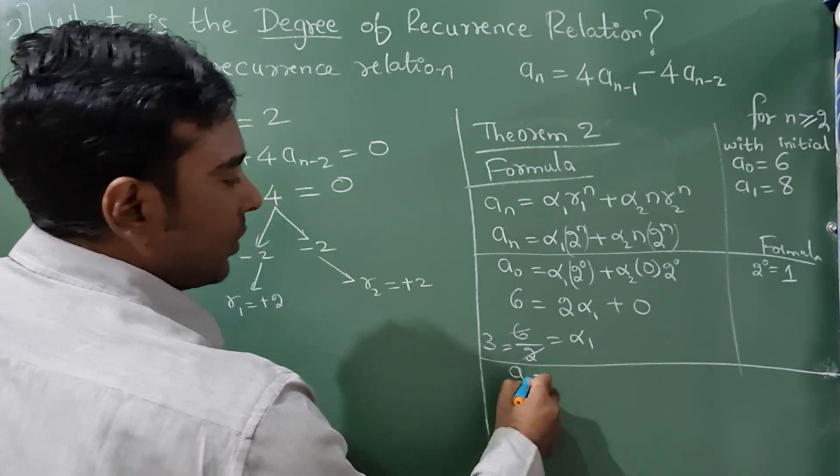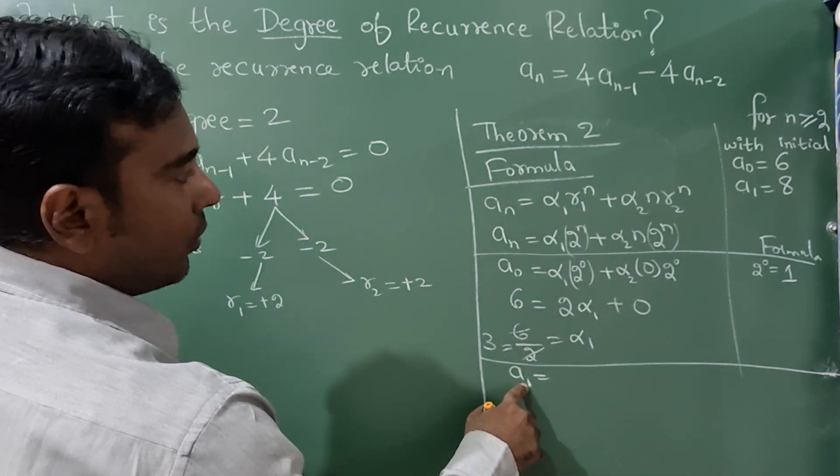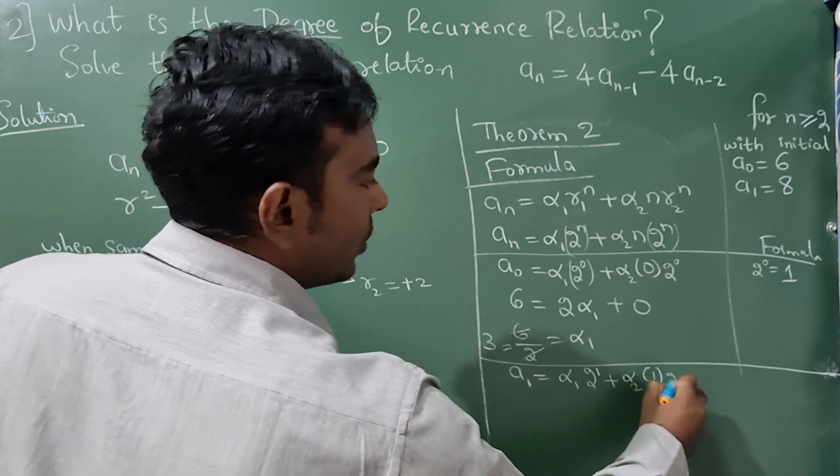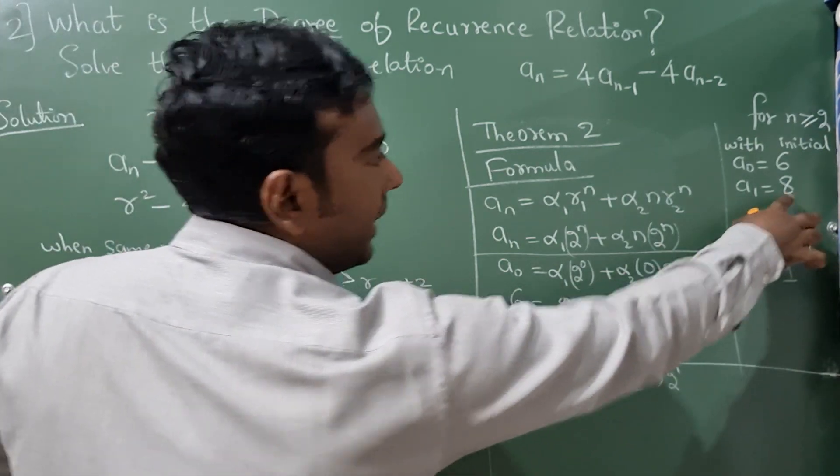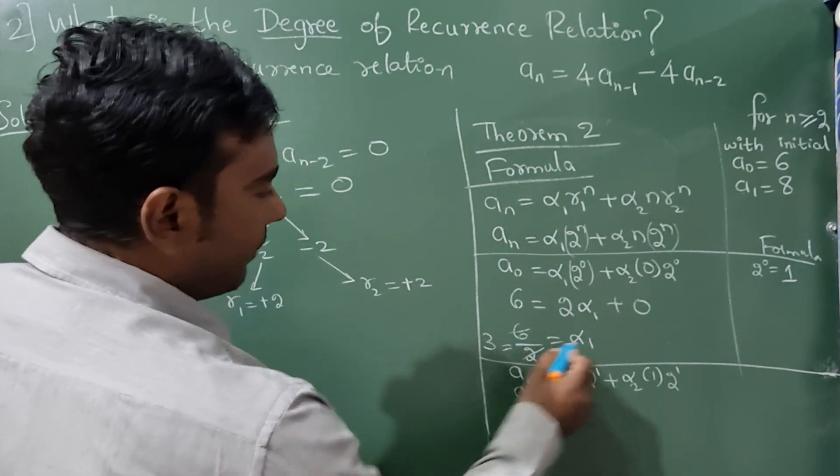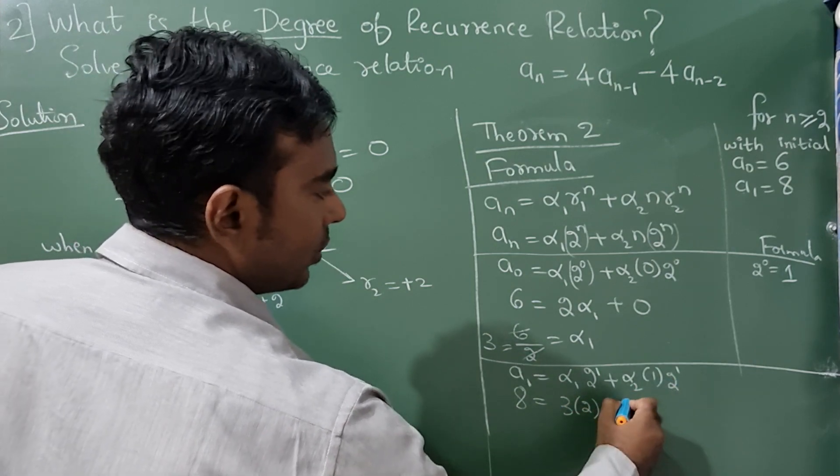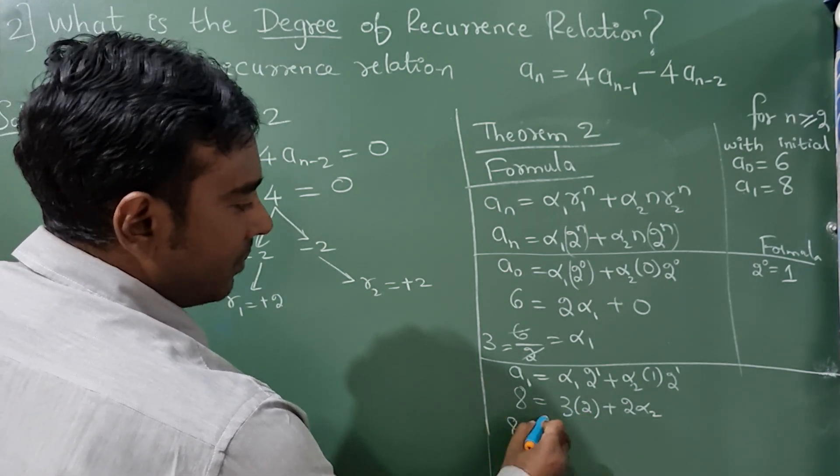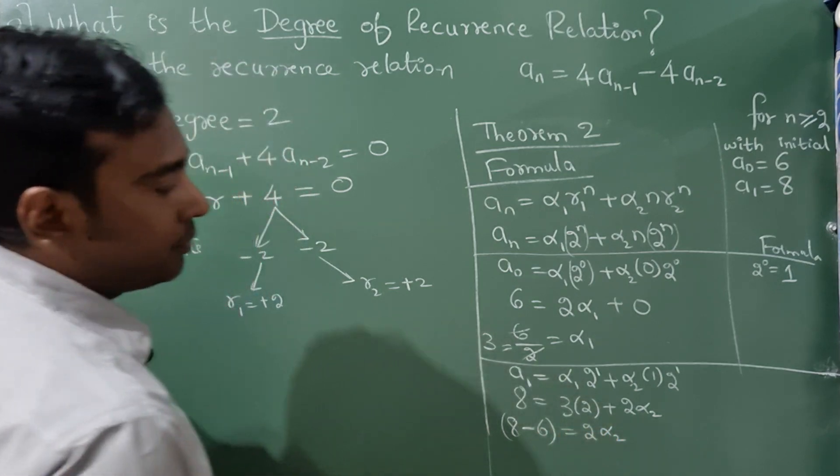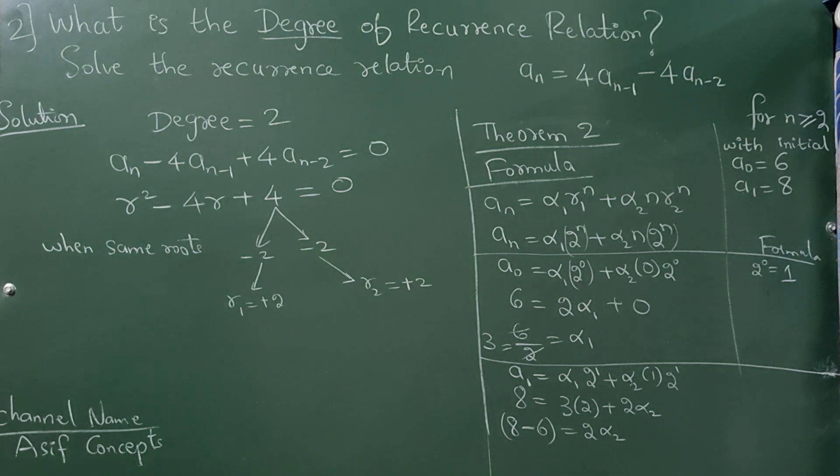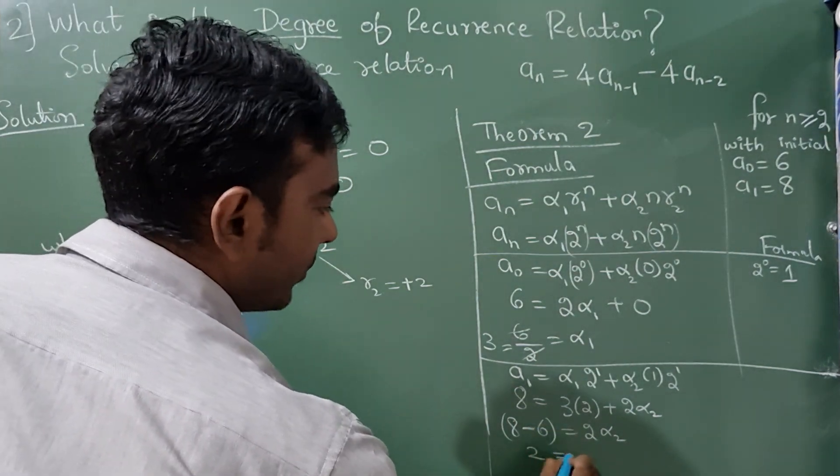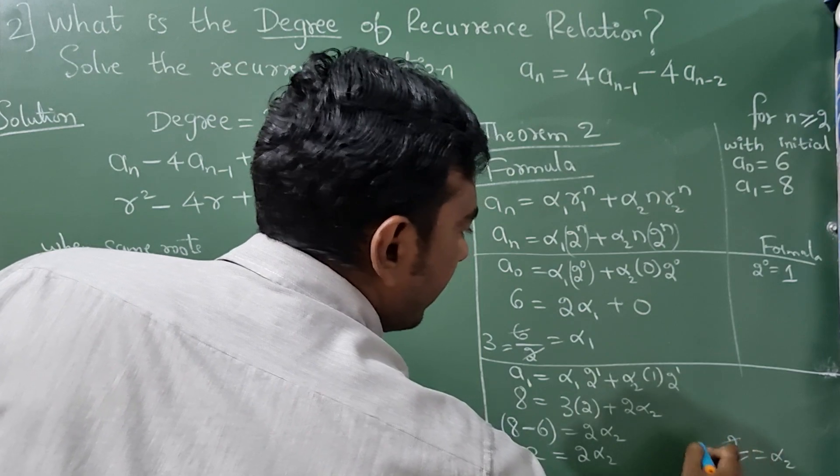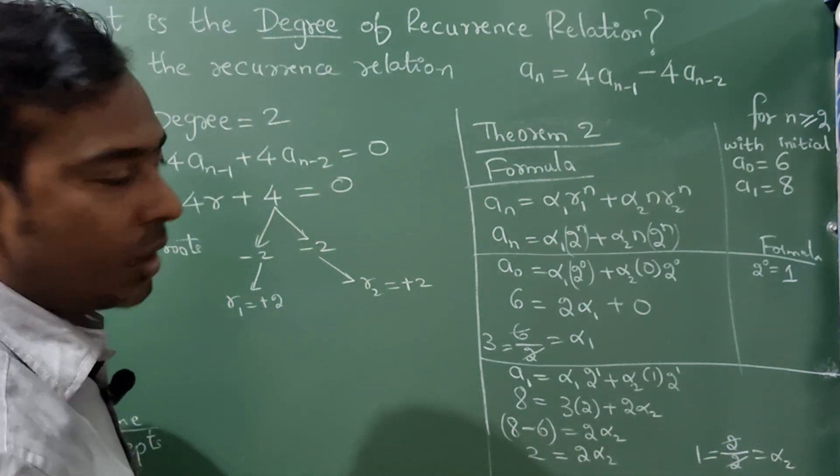Next a₁. Where there is aₙ substitute 1 there: α₁(2¹) + α₂(1)(2¹). What is a₁ value here? 8. So I'll write here 8 = α₁(2) + 2α₂. α₁ value is 3, 3×2 is 6. 8-6 = 2α₂. So 2 divided by 2 means α₂ has become 1.